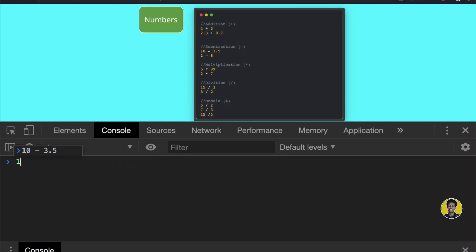Now let's look at division, which uses the forward slash symbol. If I write 15 divided by 3, it returns 5. If I write 8 divided by 2, it returns 4.